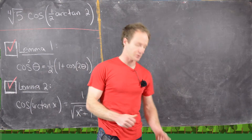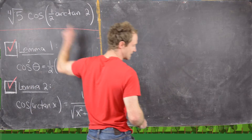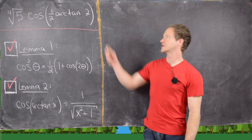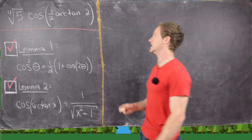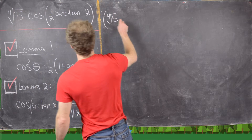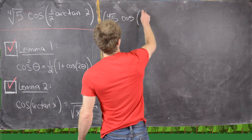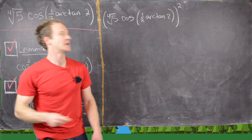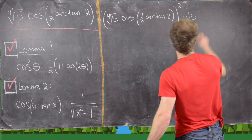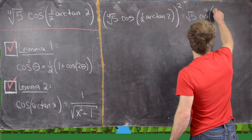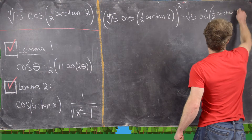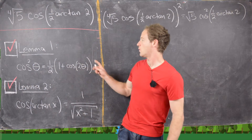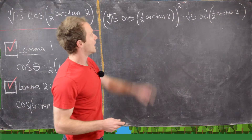Now we're ready to move on to our desired result. Inspired by Lemma 1, we'll calculate the square of our expression and then take the square root at the end. If we take the fourth root of five times cosine of one-half arctan of two and square the whole thing, that gives us the square root of five times cosine squared of one-half arctan of two.